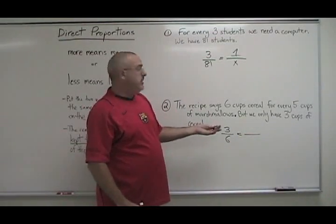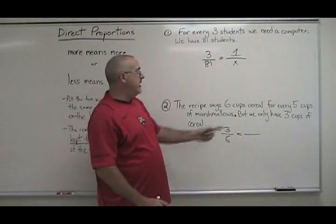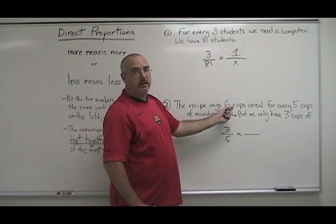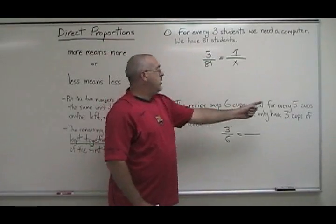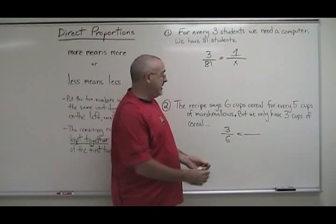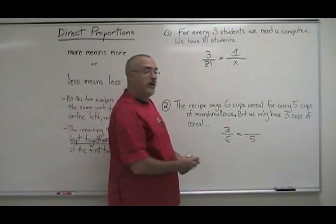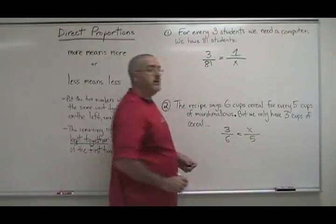The remaining number is the five cups of marshmallows and that goes with the six cups of cereal in the recipe. So we want to put the five together with the six. Since the six is on the bottom, we put the five on the bottom too. And our x is in the last remaining position.